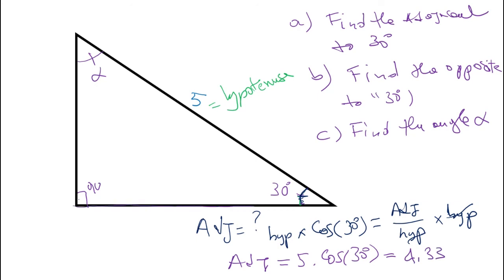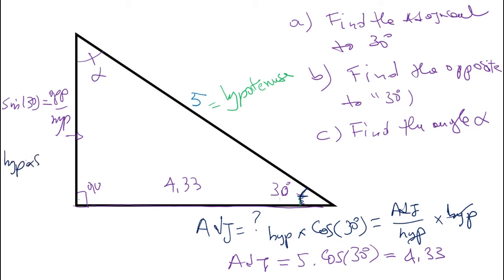So this side is 4.33. To find the opposite side, I use sine. The sine of 30 degrees equals opposite over hypotenuse. Multiplying both sides by the hypotenuse gives opposite = 5 × sin(30°) = 2.5.